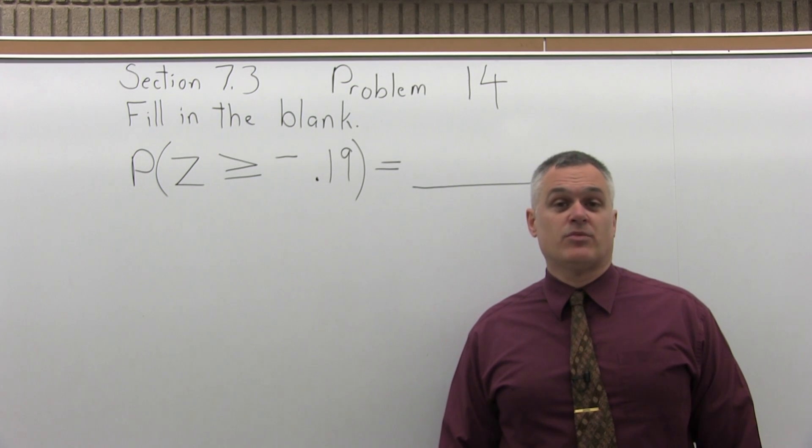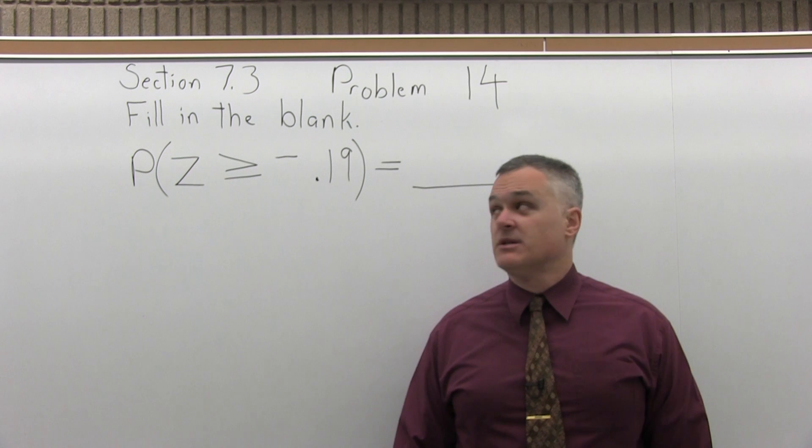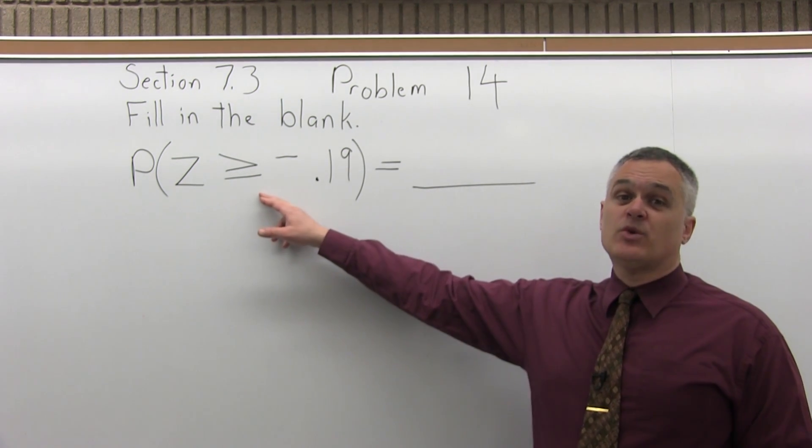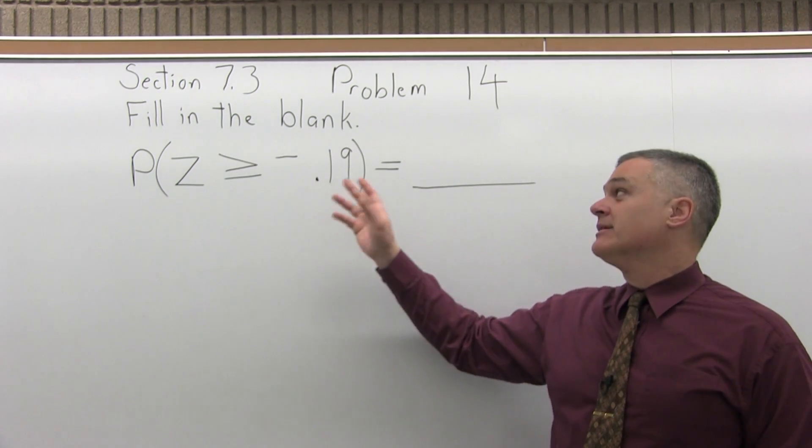This is Section 7.3, Problem number 14. It says fill in the blank: the probability that Z is greater than or equal to negative .19 equals blank.